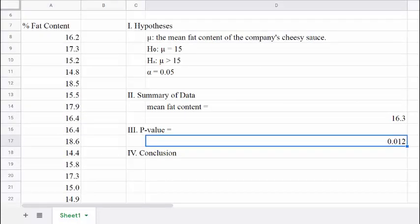A p-value of 0.012 means there is only a 1.2% chance of getting a sample mean as high as 16.3% fat, if the true mean is actually 15% fat. That's a pretty small probability.